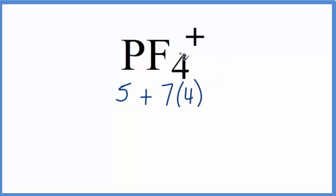This positive sign means we've lost an electron. If we lose an electron we lose a negative charge, which makes this a positive ion, so we're gonna lose one electron. If we add these up, 28 plus 5 that's 33 minus 1, equals 32 total valence electrons for the PF4 positive Lewis structure.